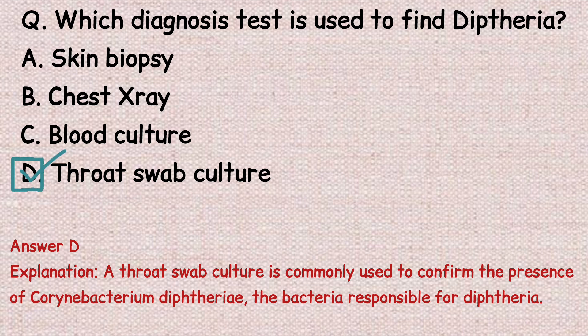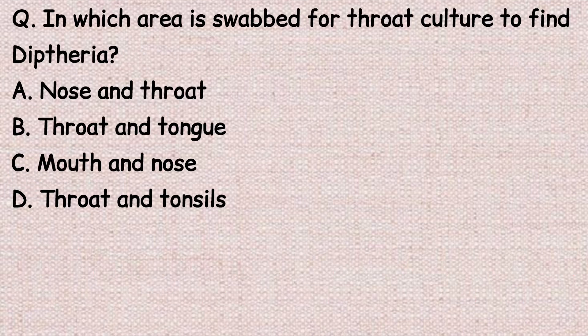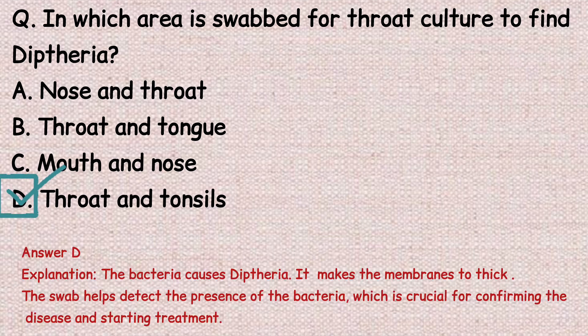The next question: in which area is swabbed for throat culture to find diphtheria? Option A: nose and throat. Option B: throat and tongue. Option C: mouth and nose. Option D: throat and tonsils. The correct answer is option D, throat and tonsils. The bacteria that causes diphtheria forms a membrane in this area; the swab helps detect the presence of bacteria, which is crucial for confirming the disease and starting treatment.